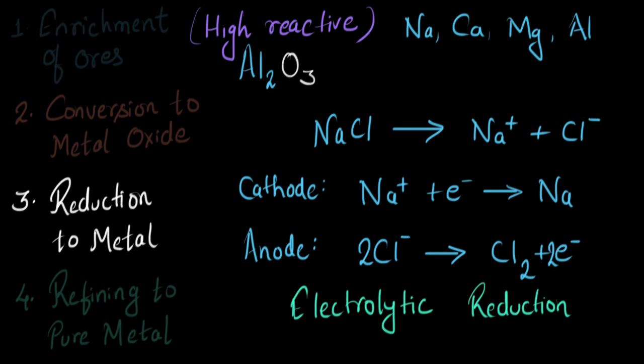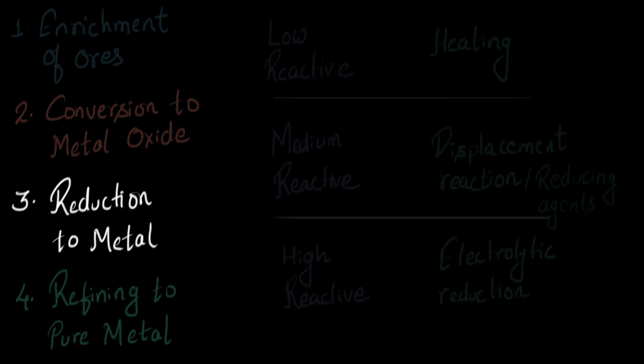Let me give you a quick overview. To reduce metals, we use heating for reducing the compounds of low reactive metal. We take the help of displacement reaction or reducing agents to reduce the compounds of medium reactive metals. And we use electrolytic reduction to reduce the compounds of high reactive metals.